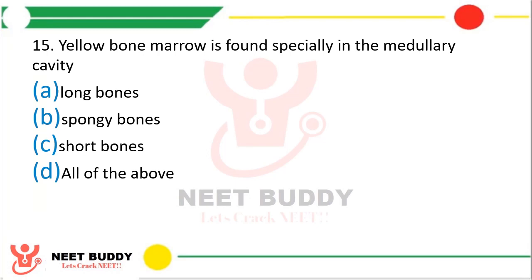Question number fifteen: Yellow bone marrow is found specially in — option A, medullary cavity of long bones; option B, spongy bones; option C, short bones; option D, all of the above. The correct answer is option A, long bones.